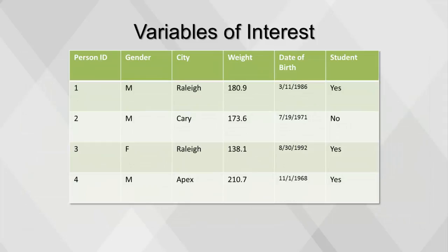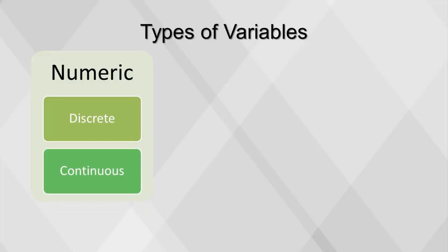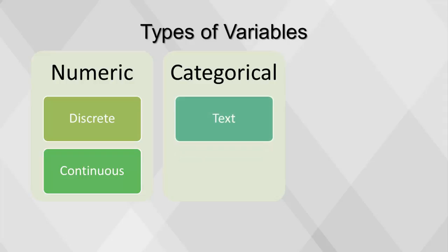Once the variables of interest have been selected, they can be renamed if needed and assigned the proper data type. There are two common variable types: numeric and categorical. Numeric variables include discrete variables, which can include whole numbers used for counting and IDs that represent a unique entity, and continuous variables, which are numbers with decimals used for measuring. Categorical variables include text, which is any combination of letters, numbers, and symbols in strings or characters, and Boolean or binary variables, which contain only one of two possible values.